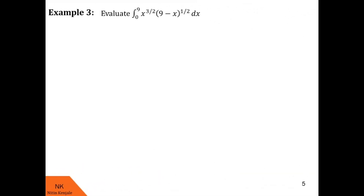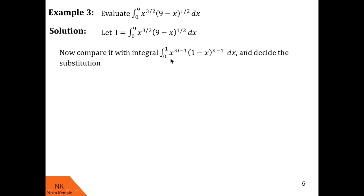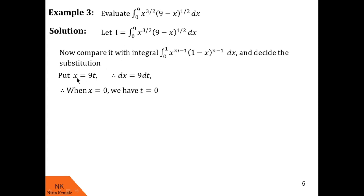In the third example, we evaluate the integral of x raised to 3 by 2 into 9 minus x raised to one-half, dx over the limit 0 to 9. We label this as i and compare with the beta function integral, but we notice that the term 9 minus x must be transformed to the type 1 minus x. To do this, we use the substitution x equals 9t, giving dx equals 9dt. When x is 0, t is 0; when x is 9, t becomes 1.